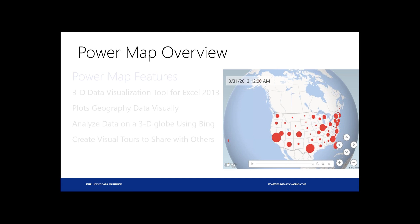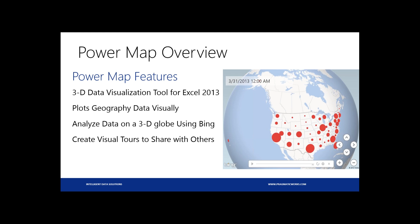A little bit about PowerMap: basically, what it does is create a three-dimensional visualization and mapping tool inside of Excel 2013. It's only Excel 2013 — there's no add-in for 2010, so sorry to folks that are 2010 users. It is an add-in, so you do have to go and download it, and it is currently still in preview mode. It's very clear what it's going to do: it takes geographical data and maps it to a three-dimensional map that uses Bing. Knowing that it uses Bing, you'll also need to have internet to use PowerMap, because it has to reach out to the internet to pull back the map results.